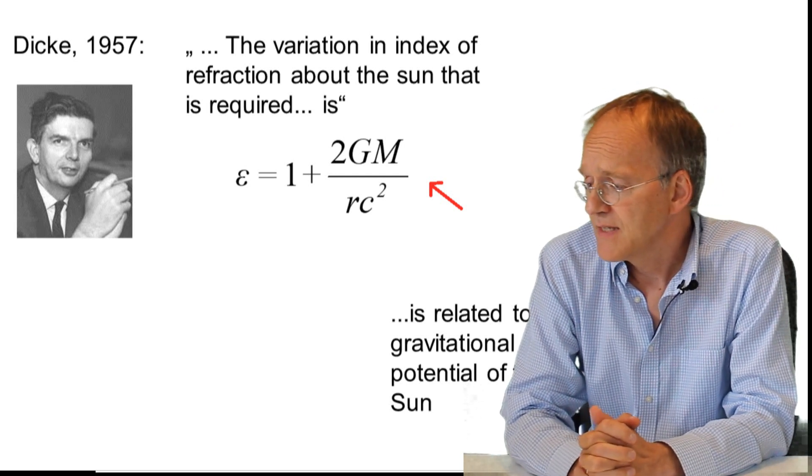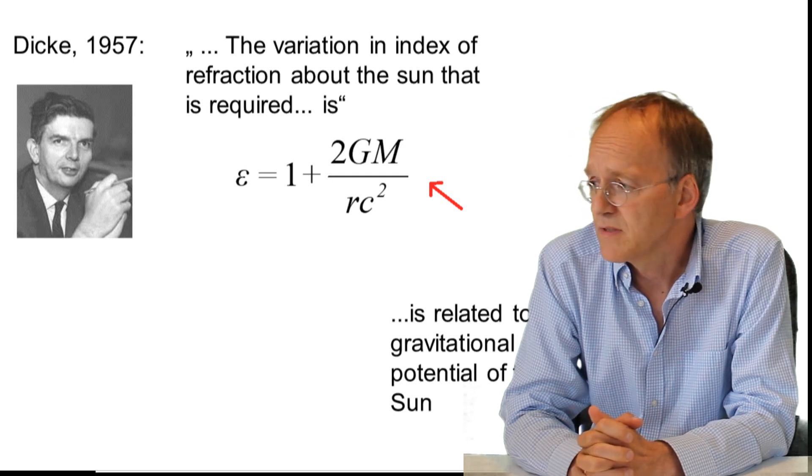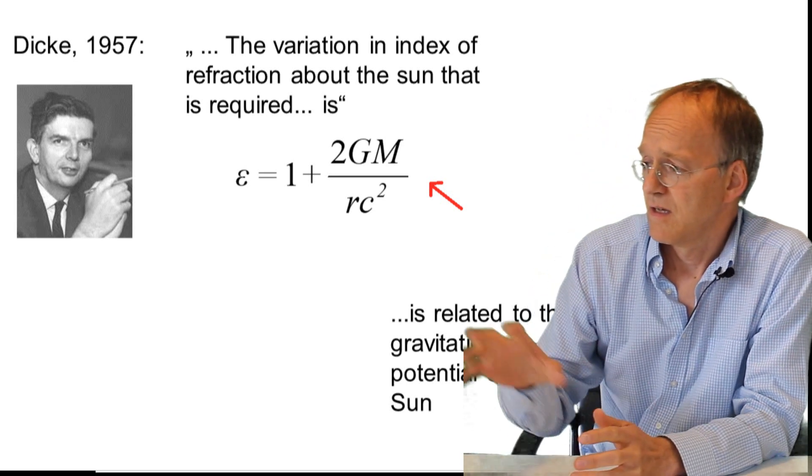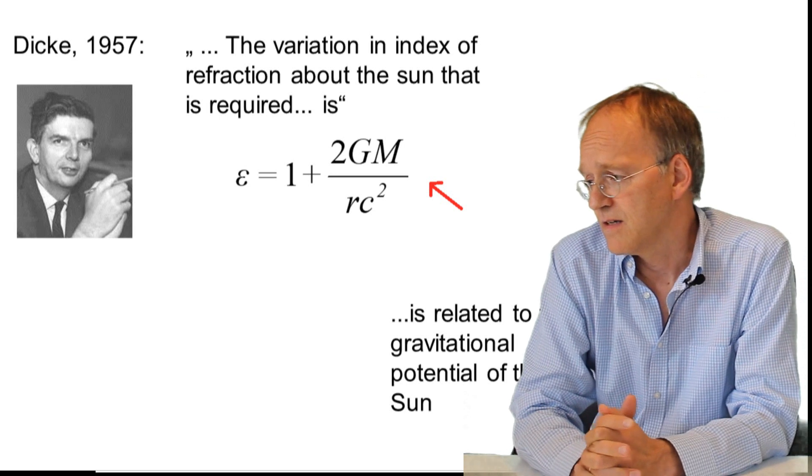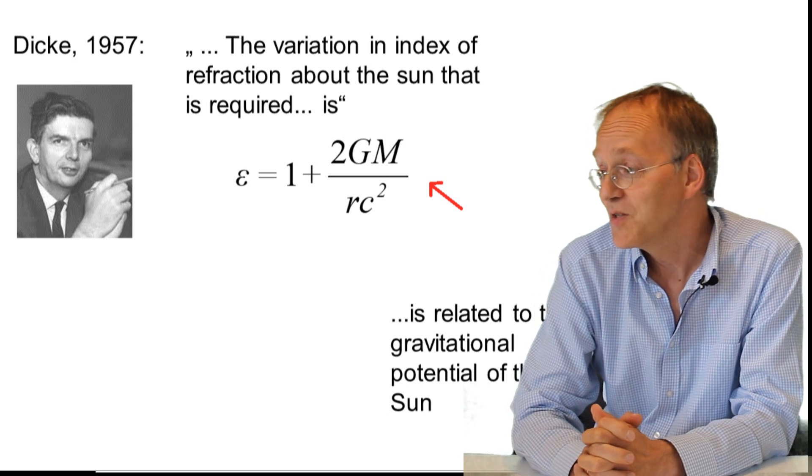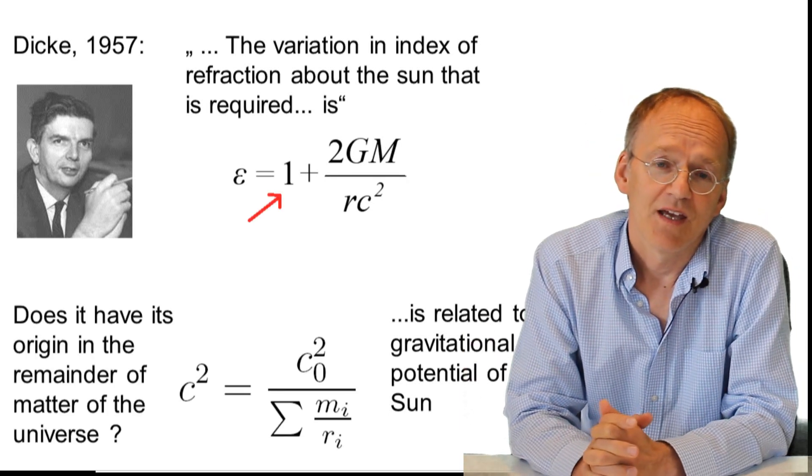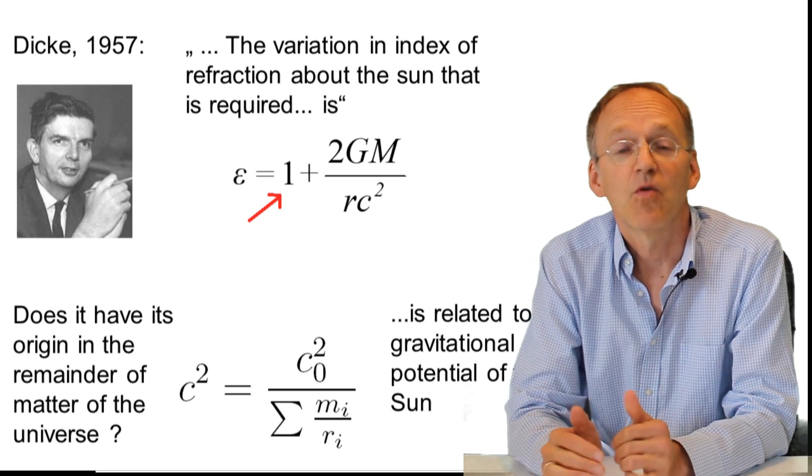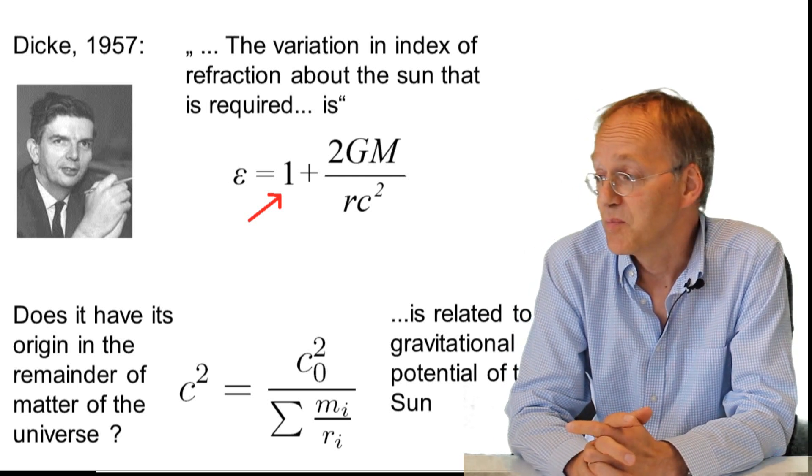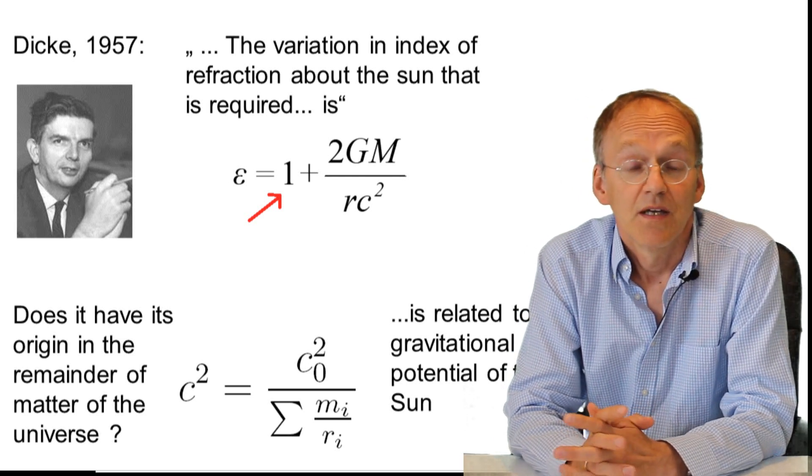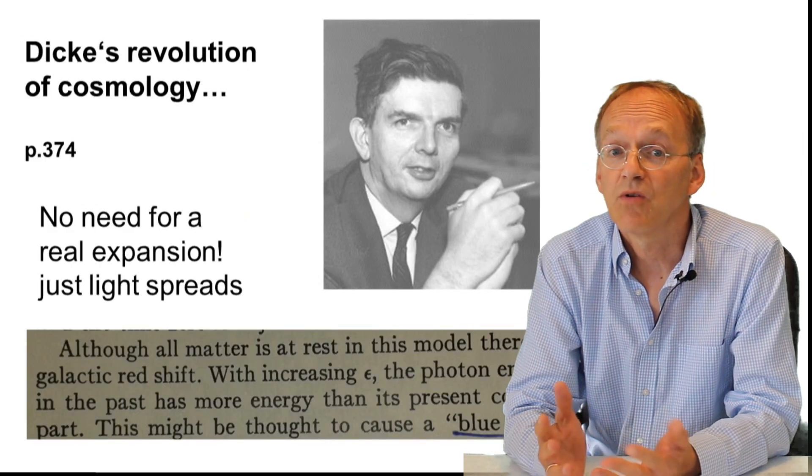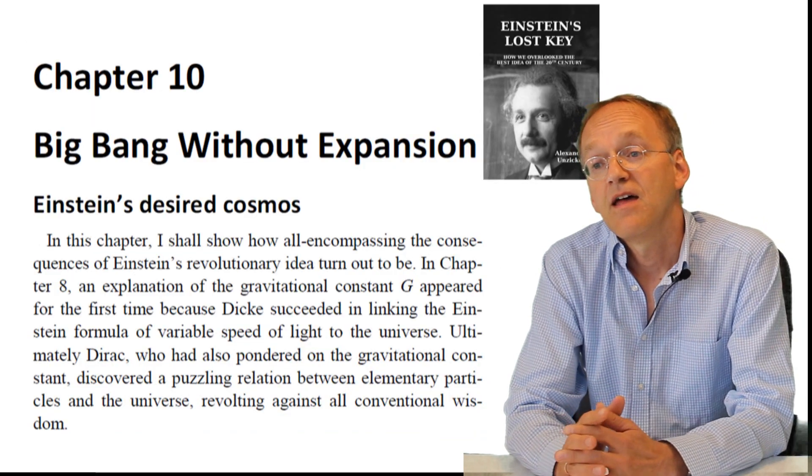Now as I said, this is all in agreement with observations, but Dicke makes an interesting suggestion here. He says the right hand side is a small number related to the gravitational potential of the sun. Could it be that the one in the equation is related to a corresponding sum over all other masses in the universe? Now this is a beautiful idea, but the concept behind is even more intriguing because it leads to a cosmos in which there is no material expansion of matter, just light that spreads.